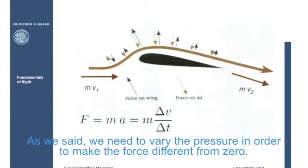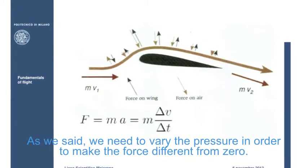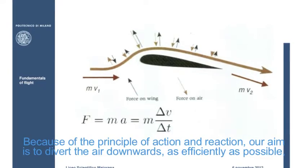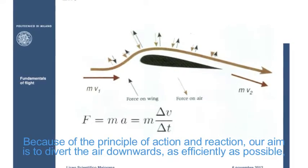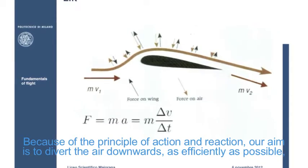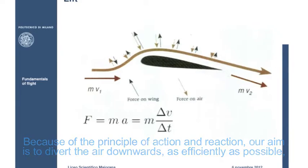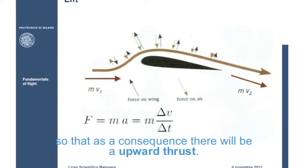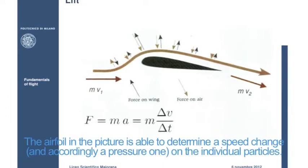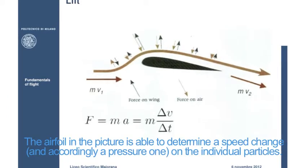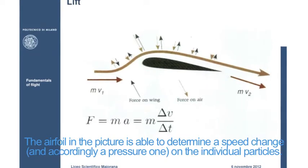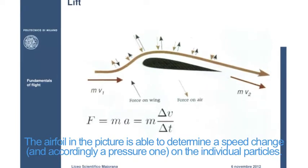As we said, there is a need to vary the pressure in order to make the force different from zero. Because of the principle of action and reaction, the aim is to divert the air downwards, as efficiently as possible, so that, as a consequence, there will be an upward thrust. The airfoil in the picture is able to determine a speed change, and therefore, a pressure change, on the individual particles.